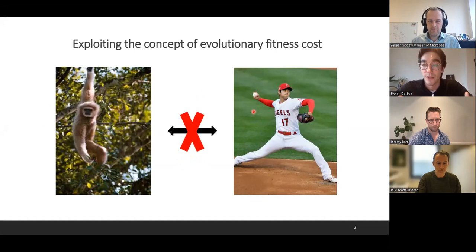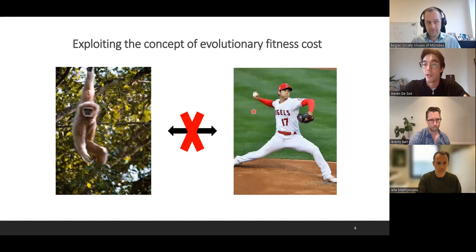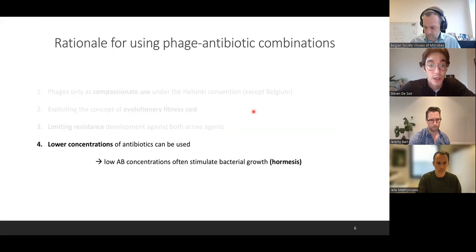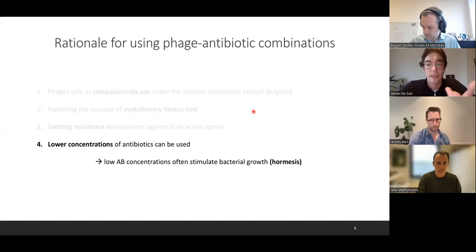This is what we can exploit with phage and antibiotics as well. Imagine a bacterium incorporating more porin structures in its cell membrane to become resistant towards antibiotics — if you use a phage which adheres to these porins, you can use this evolutionary process to your benefit. An effective treatment would limit resistance development against both active agents and lower antibiotic concentrations used. However, some papers indicate that low antibiotic concentrations can even stimulate bacterial growth, so that's something to keep in mind.